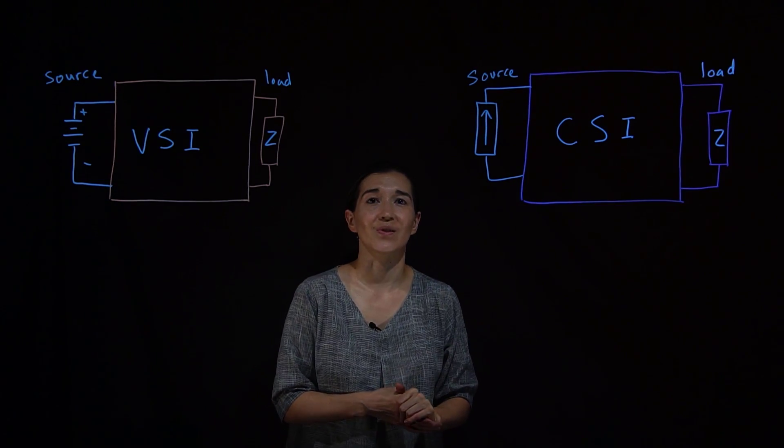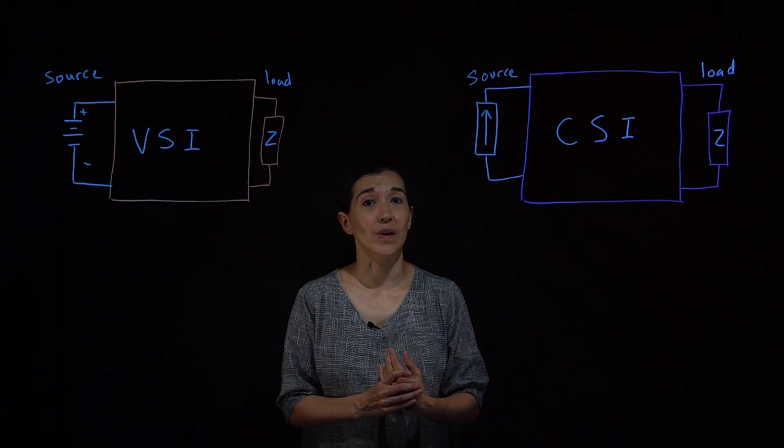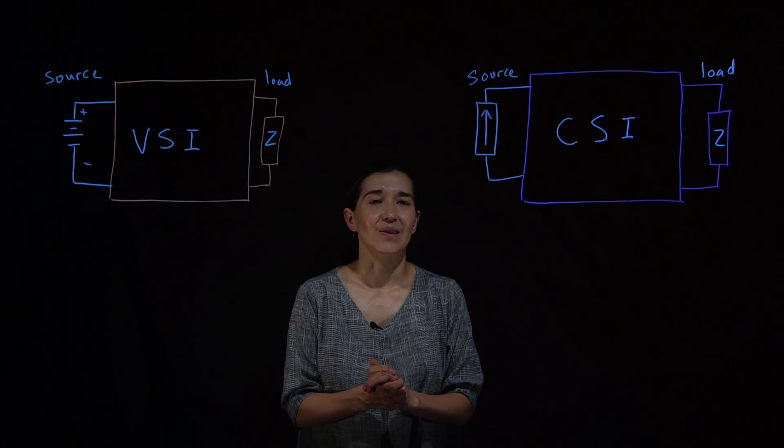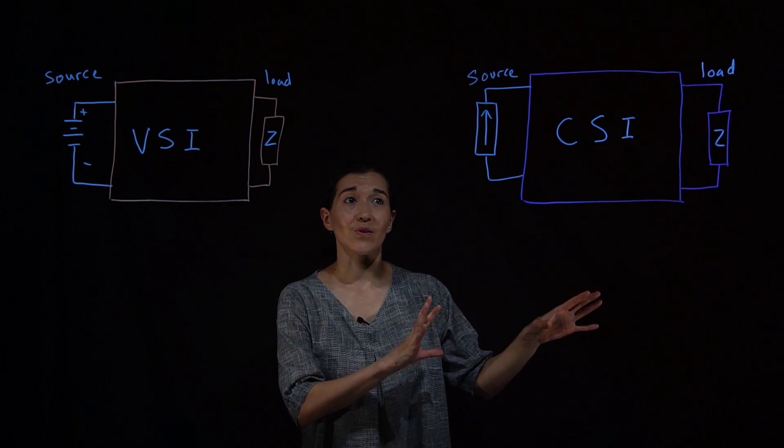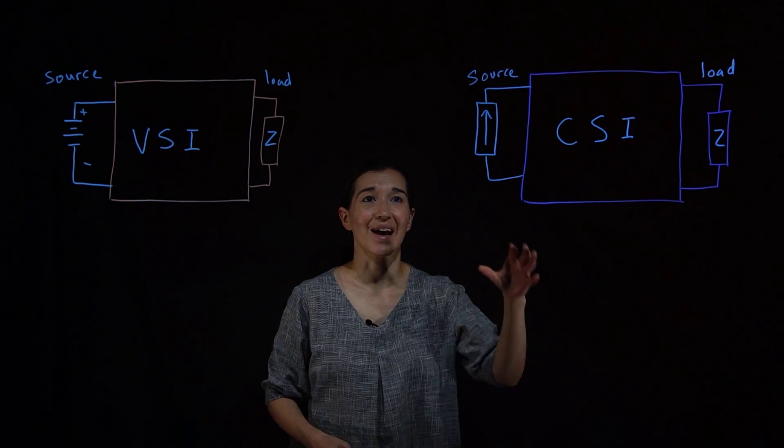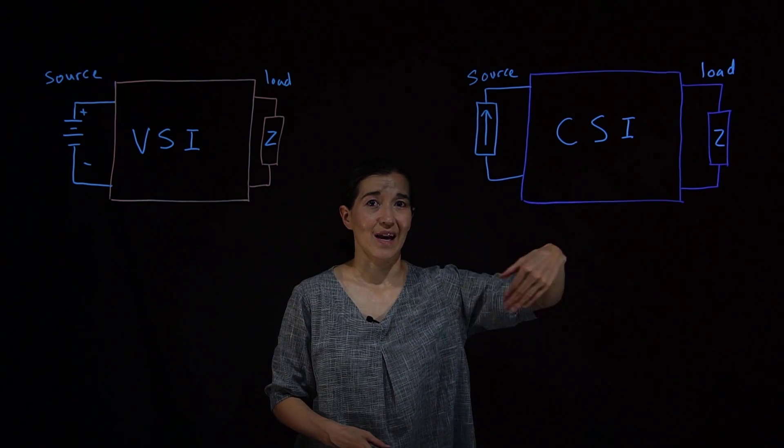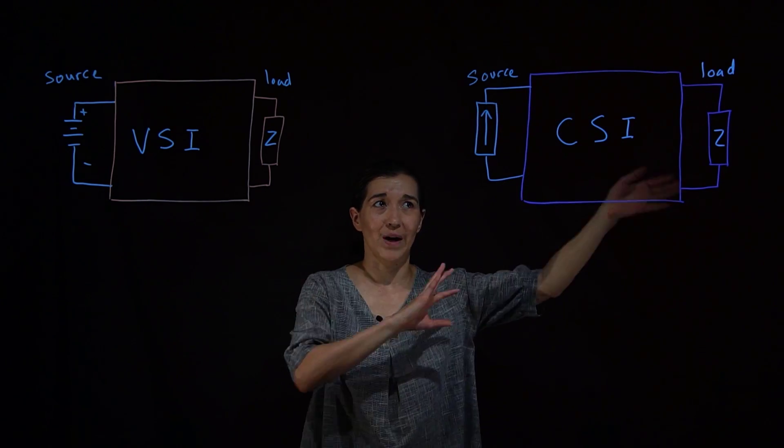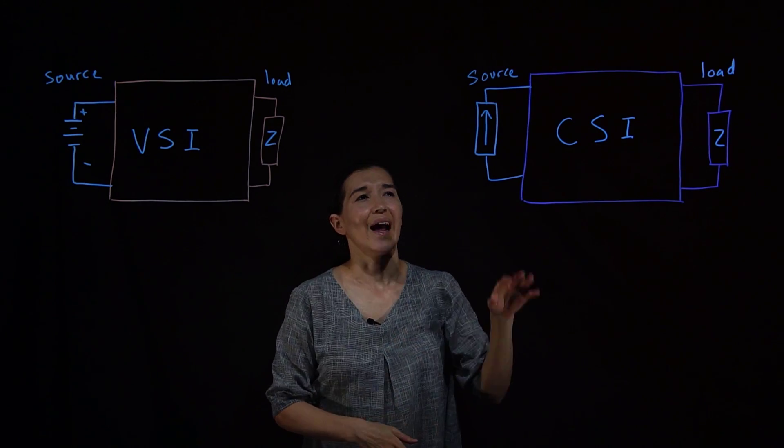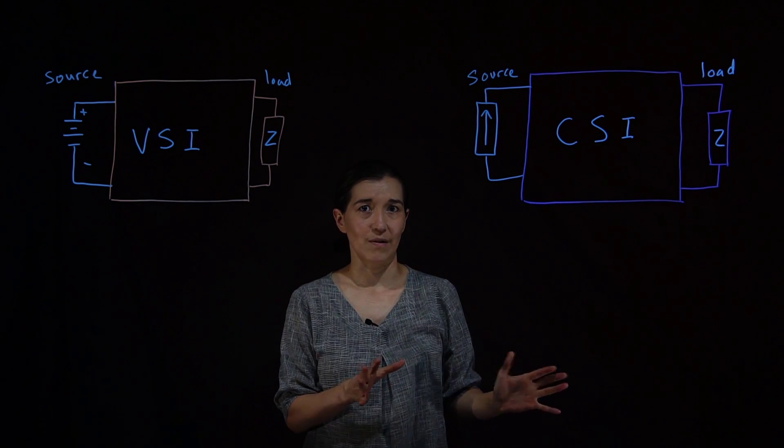The current source inverter assumes that your source is more like a current source, and so the current source inverter is a series of switches that will then take that current and transform it over positive and negative directions in the load. And then the voltage is determined by the impedance of the load itself.